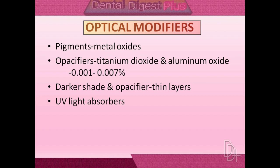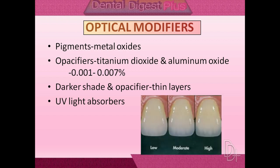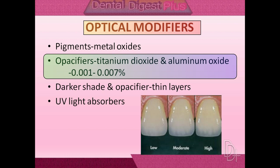Optical modifiers provide the opacity or translucency needed to make composites similar to natural tooth tissue. If the composite material has greater translucency, a greater amount of light passes through, making the material appear darker in shade because light is not reflecting back. By adding opacifiers like titanium dioxide and aluminum oxide, the desired shade of the material can be achieved.